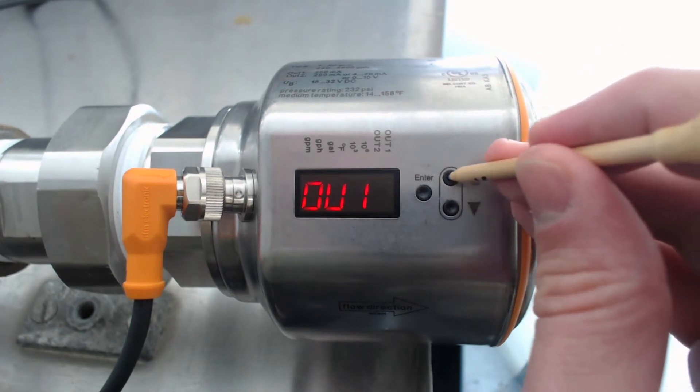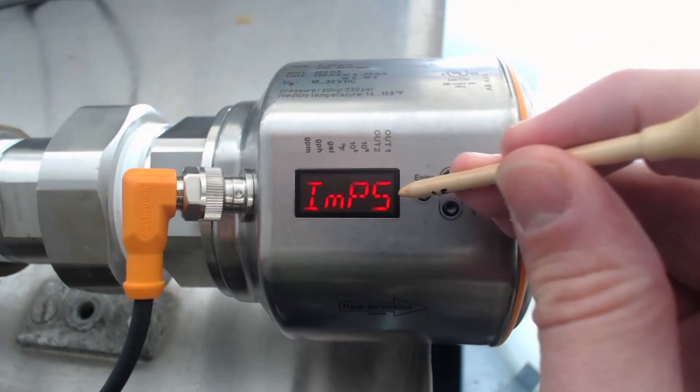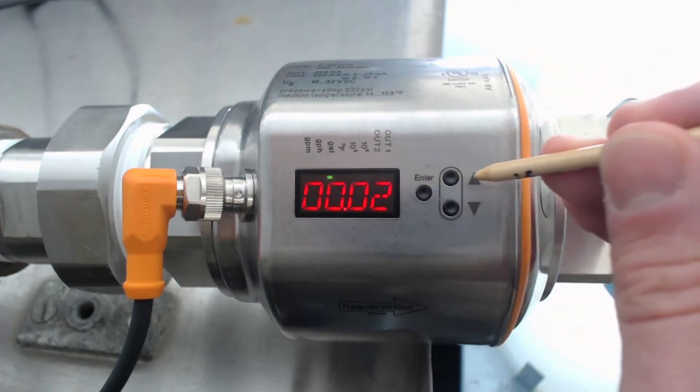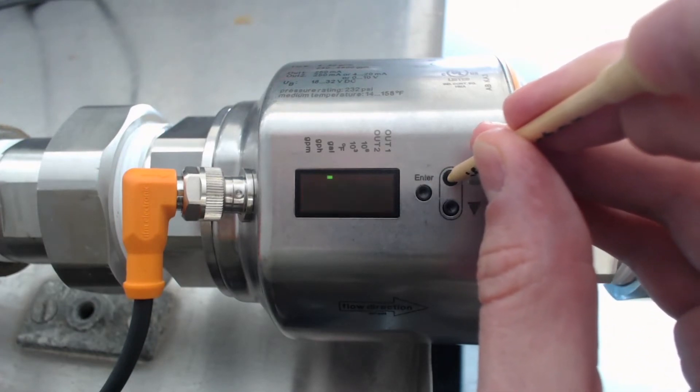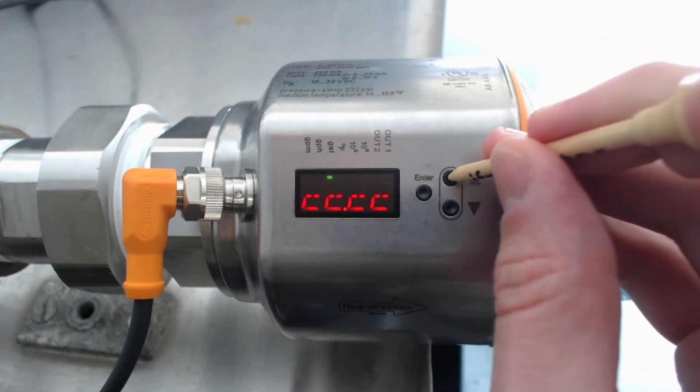Now press the upper button twice to go to IMPS for impulse signal. Press Enter. Press and hold the upper button again. This allows you the ability to move the decimal point.